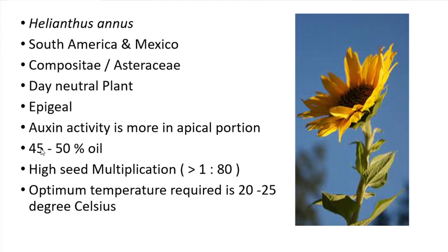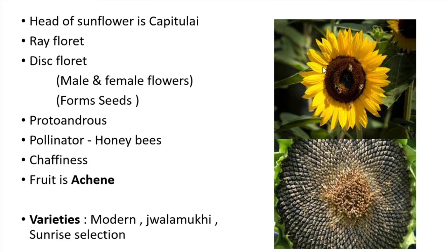In sunflower you can see the highest seed multiplication ratio, which is more than 1:80. The optimum temperature required for growing sunflower is 20 to 25 degrees Celsius. The head of sunflower is called a capitulum, and it consists of two florets: ray floret and disc floret. The ray floret is the yellow colored one which mainly attracts pollinators for pollination.